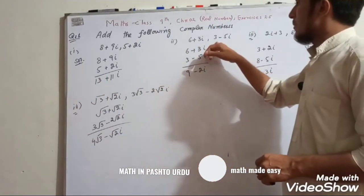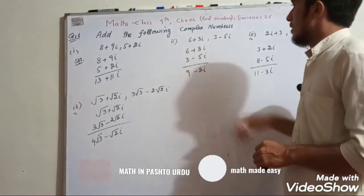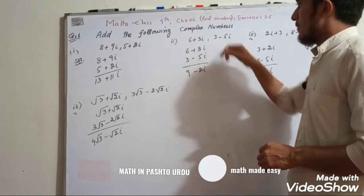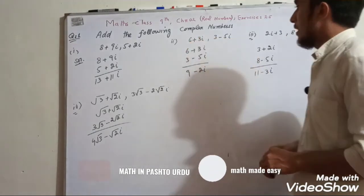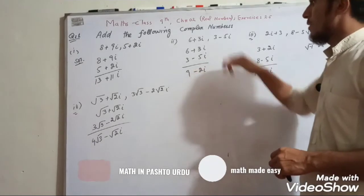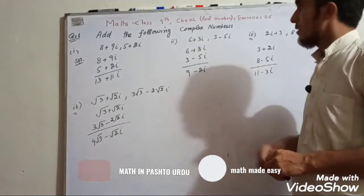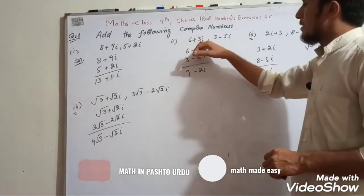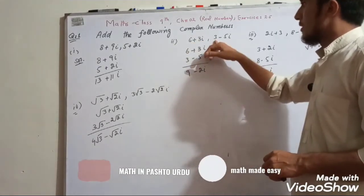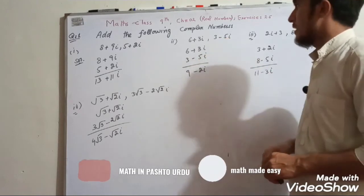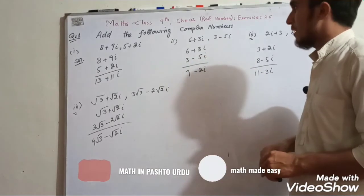Now we will add the answer with 3 minus 5 iota. The real part is here and imaginary part is here. Real part is 3 and imaginary part is minus 5 iota.